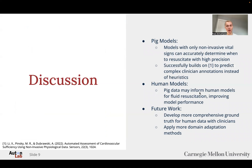Overall, this work shows that pig models with only non-invasive vital signs can accurately determine when to resuscitate with high precision and accuracy, and successfully builds on prior work by using complex clinician annotations instead of heuristics. For the human models, we found that pig data may inform human models for fluid resuscitation, improving model performance. However, in future work we are going to continue to develop a more comprehensive ground truth for human data, potentially getting doctor annotations, and we plan to apply more domain adaptation approaches.